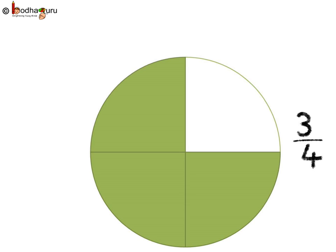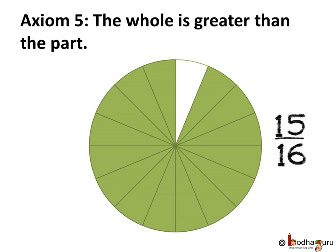We know that three-fourths is less than one because we divided an object into four equal parts and took only three parts, that is three out of four. Same way, fifteen by sixteen is less than one because the whole is greater than the part, and it's another axiom.